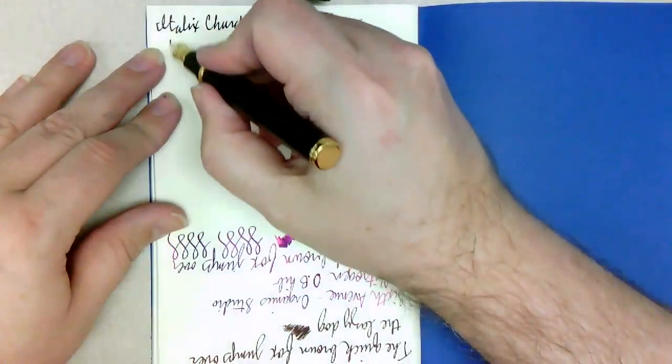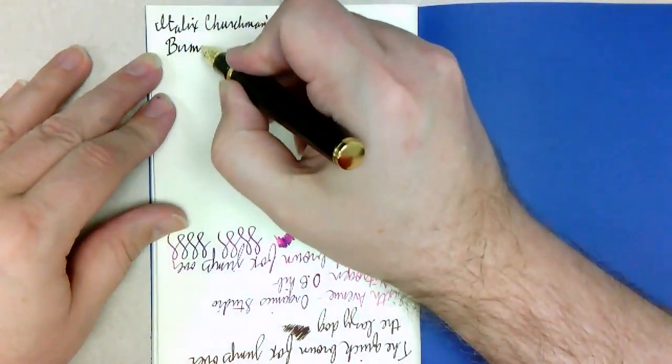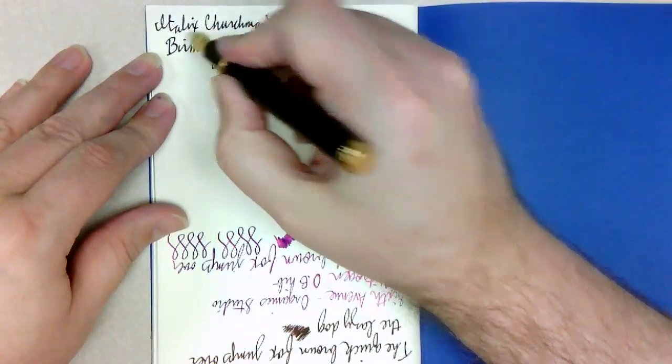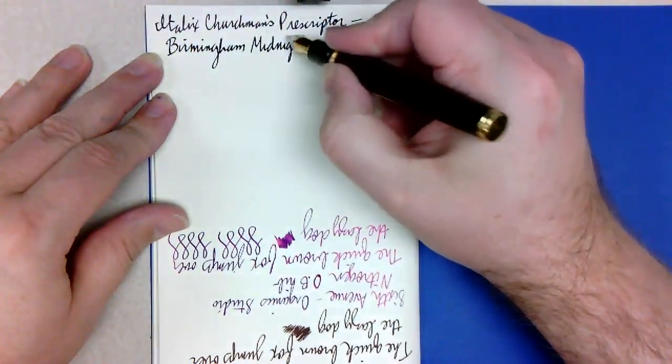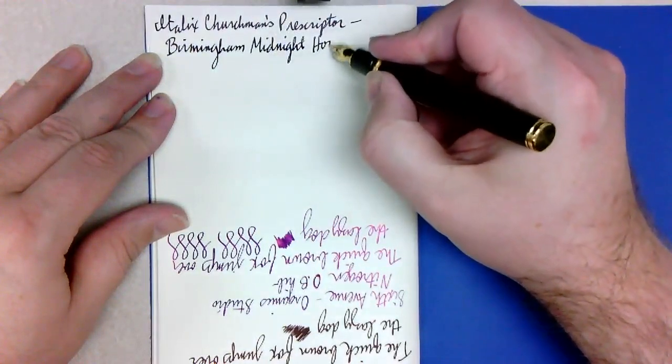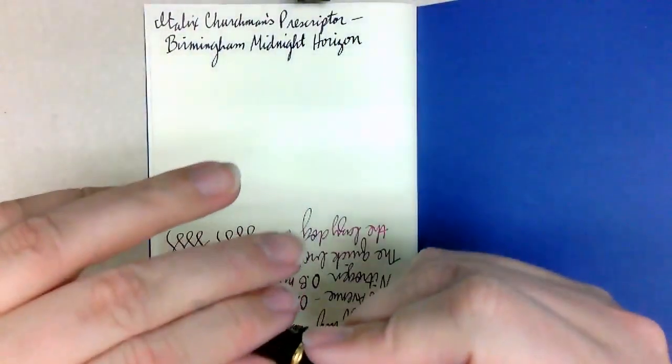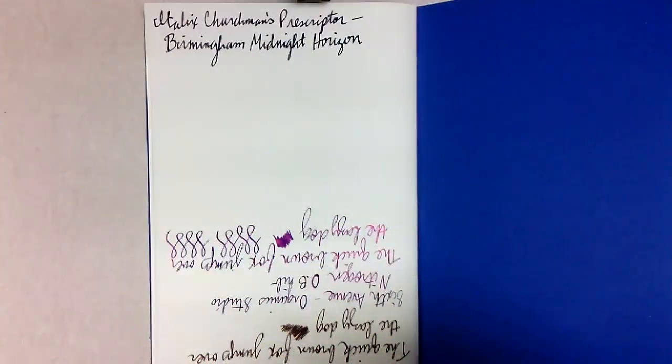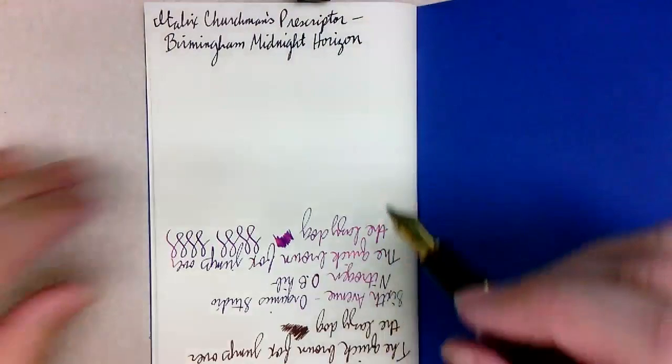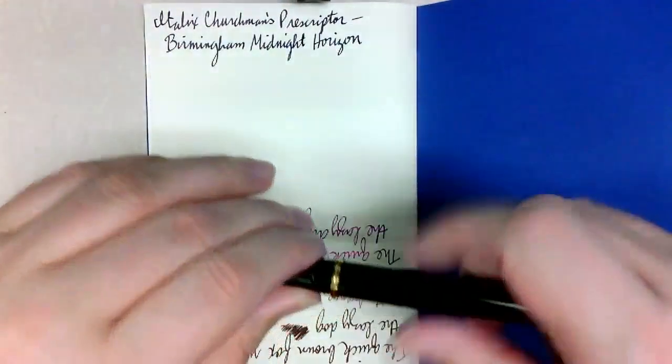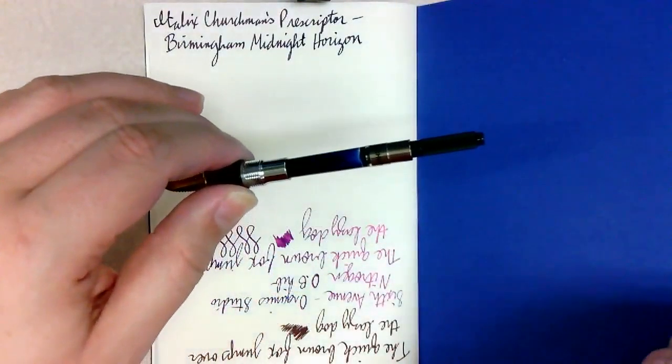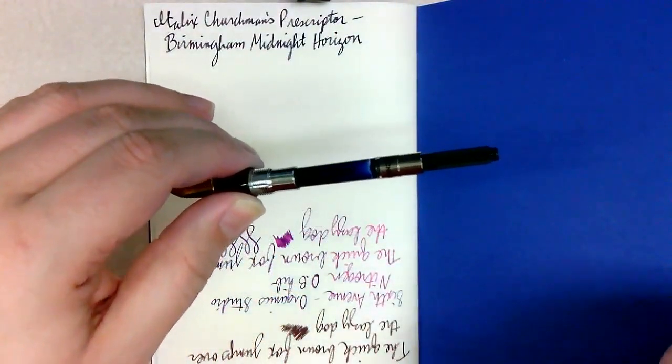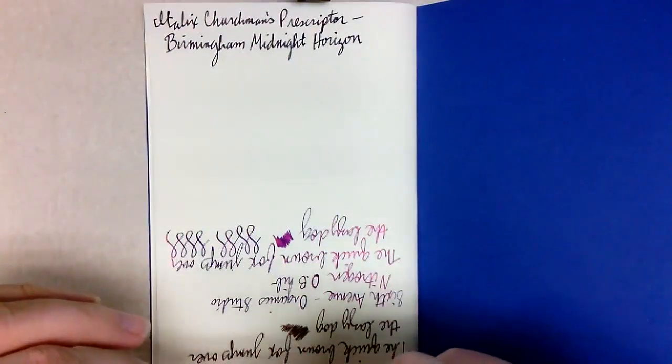And this ink is another Birmingham ink. This is the Midnight Horizon. So this thing looks definitely very blue in the bottle. Like, if you're looking at the bottle, you would think it is a blue ink. I'll try to think if I have, somewhere in there I have the ink bottle, maybe I can show it. If you're looking at it against glass, I mean, it has a blue thing to it, but it writes almost black.